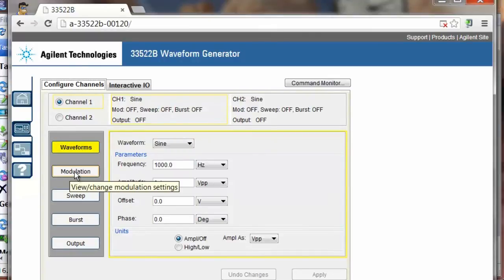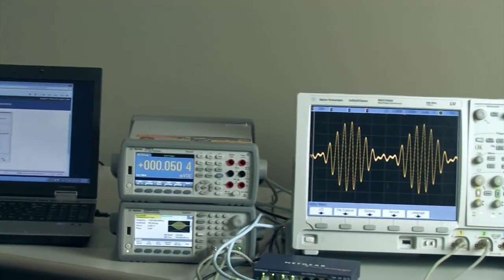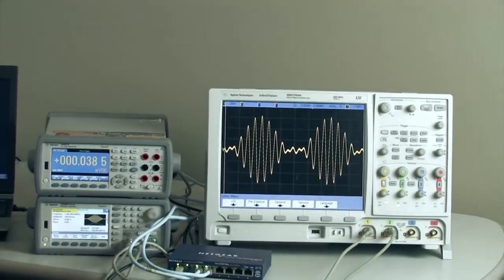And we'll be able to see this on our oscilloscope when we go ahead and apply it. So I've applied the modulation and now you can see the modulation on the oscilloscope. So that's our first method for controlling our instruments.